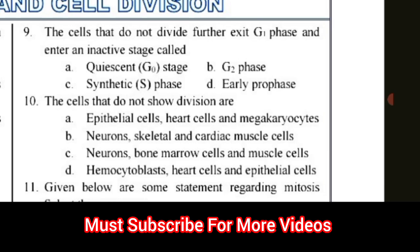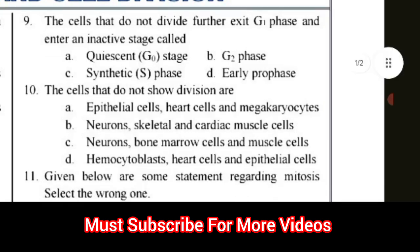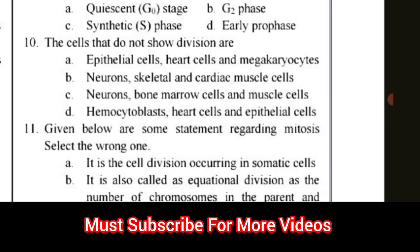Question number 10: The cells that do not show division are? Options: A) epithelial cells; B) heart cells and megakaryocytes, neurons, skeletal and cardiac muscle cells; C) neuron, bone marrow cells and muscle cells; D) hemocytoblast, heart cell and epithelial cells. The correct answer for question number 10 is option B.